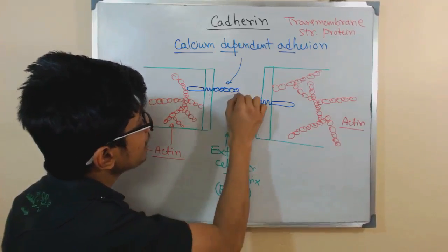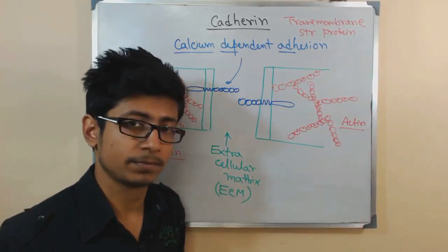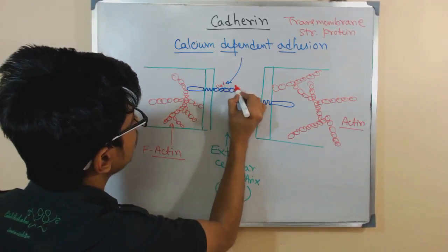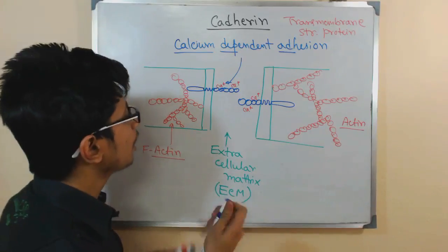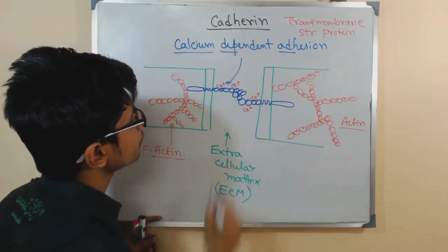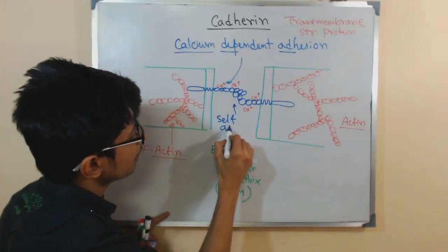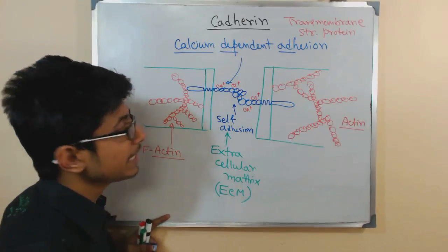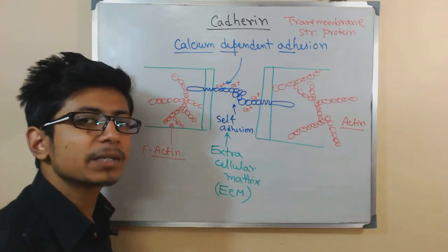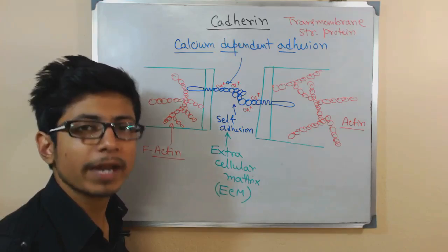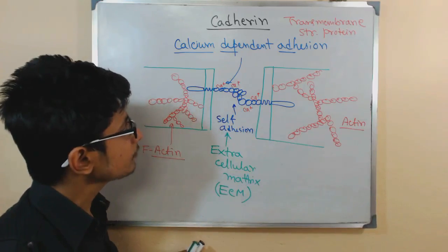Without calcium, cadherins are functionless. Once calcium ions begin to bind to them, the cadherins become active and start to arrange and adhere to one another. This is the self-adhesion of cadherins in the extracellular matrix. Though this is a simplified picture, the actual process involves many other proteins such as intermediate filaments and additional structural components.